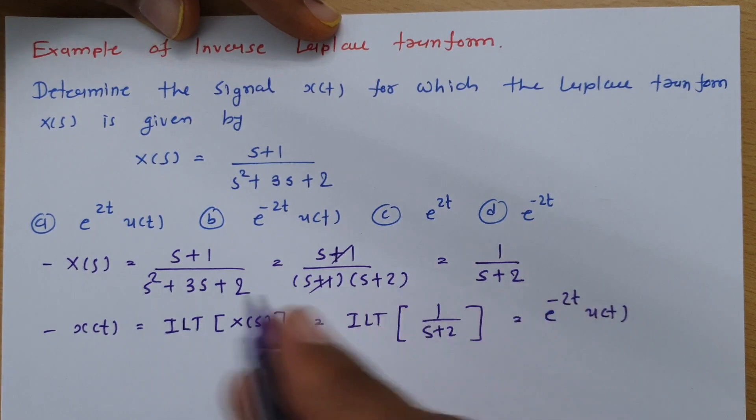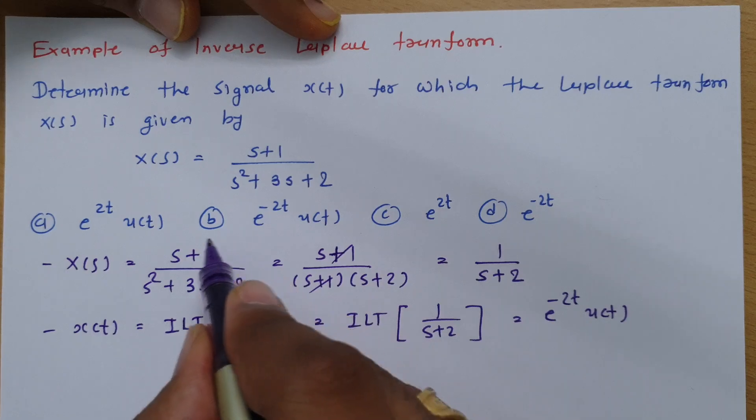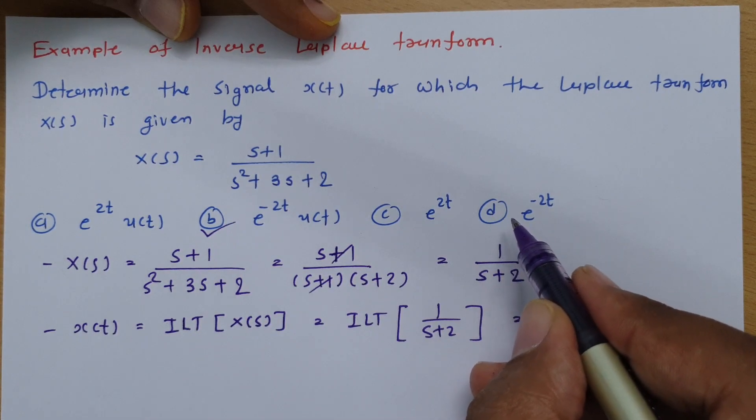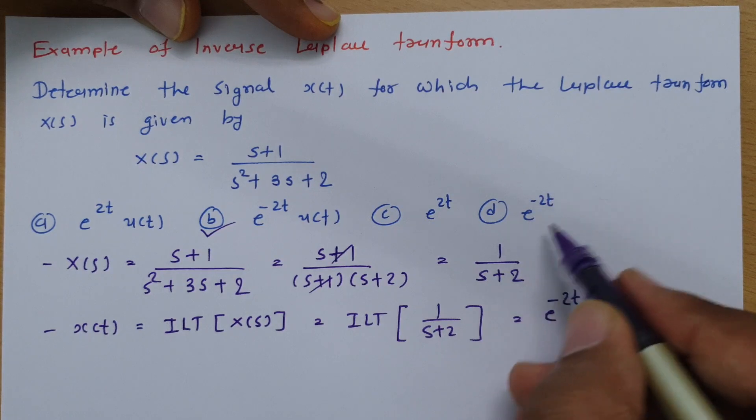Now if you observe the options then this is our correct option. But here you will find in option D it is written e^(-2t) only.